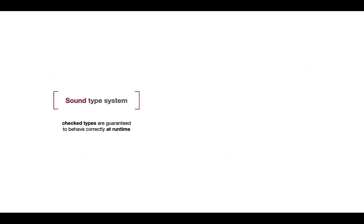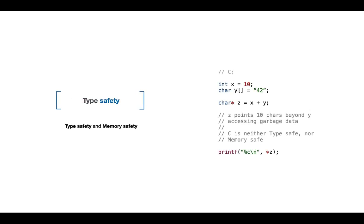We also differentiate type systems as sound and unsound. Usually that means the runtime gets guarantees from the type checker that everything will be okay during execution, relating to type safety and memory safety. For example in C, we can define an integer x and a character array, then define a pointer z and do the operation x plus y. This is just a pointer operation — z now points 10 characters beyond y, accessing garbage data and potentially causing a segmentation fault. This means C is neither type safe nor memory safe, even though it still has a static type checker.